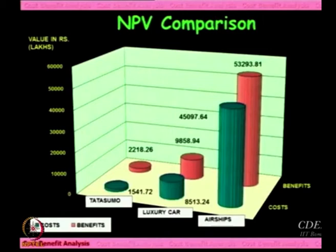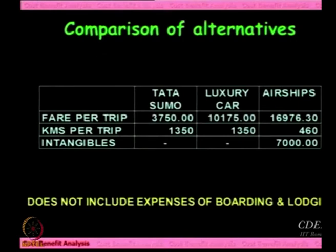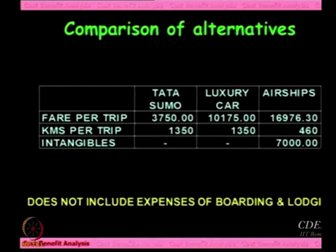If you look at the net present value comparison — the investment happens over years and you bring it back to today keeping in mind possible inflation — for Tata Sumo, the costs are very low, the benefits are also not very high but they are more than the costs. For luxury car, it is a larger number. For airships, there is a very huge cost but also a very huge benefit. Summing up in rupees: the fare per passenger in Tata Sumo is around 3750 rupees, luxury car 10,000 rupees, airship 17,000 rupees. And if you assume that 7,000 rupees per trip is what you are happy to pay for the comfort and the time saving, the airship becomes equivalent to a luxury car.